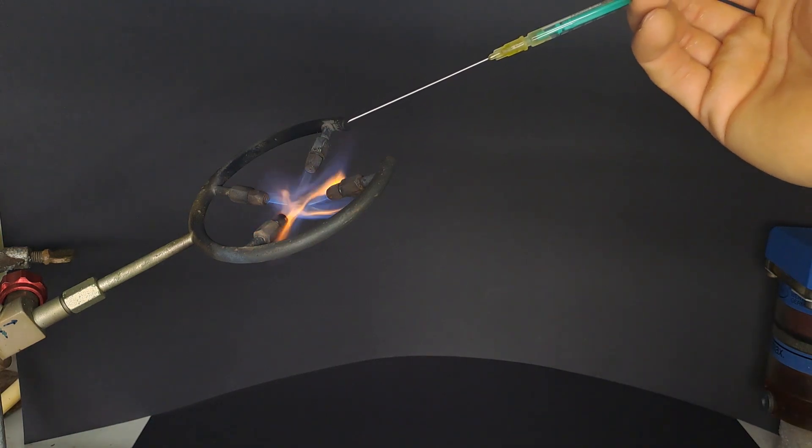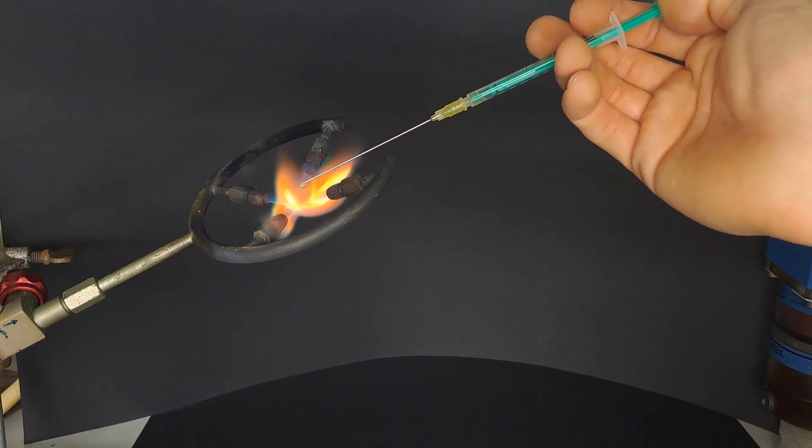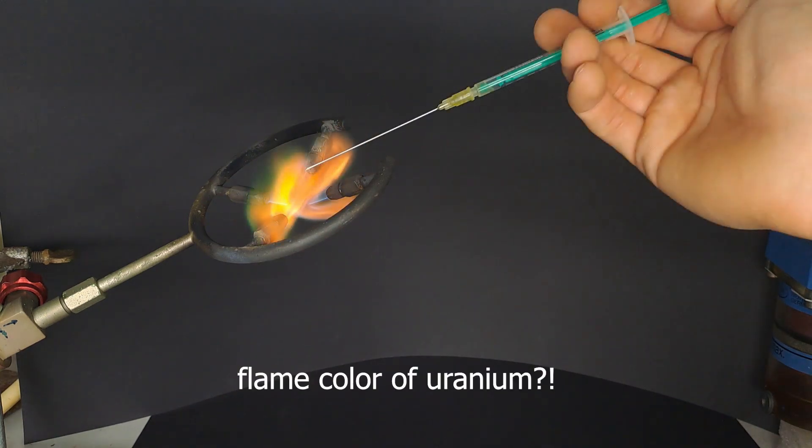How about balancing the drop on the needle? Aha! I see green! But is it really from the uranium or is it just from the needle?